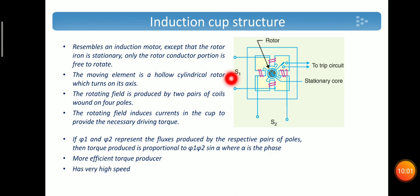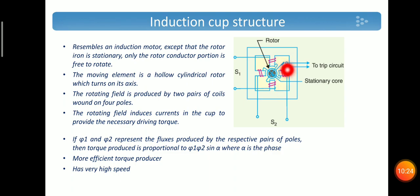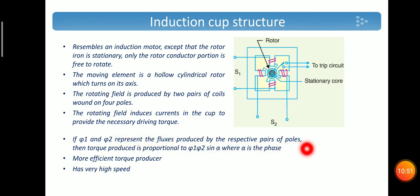The next type is the induction cup structure. It resembles an induction motor, except that the rotor iron is stationary — only the rotor conductor portion is free to rotate. The moving element is a hollow cylindrical rotor which turns on its axis. The rotating field is produced by two pairs of coils wound on four poles. The rotating field induces current in the cup to provide the necessary driving torque. Two poles carry the same flux, and the flux in the other two poles is at an angle alpha. If phi-1 and phi-2 represent the fluxes produced by the respective pair of poles, then torque = phi-1 · phi-2 · sin(α), where alpha is the phase difference. This structure has very high speed.